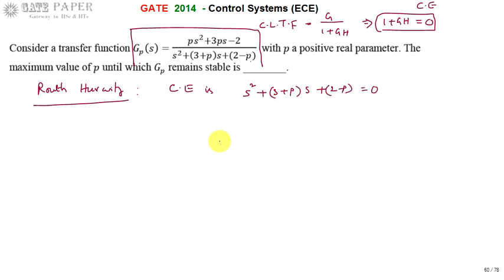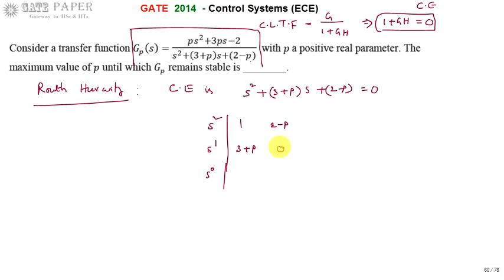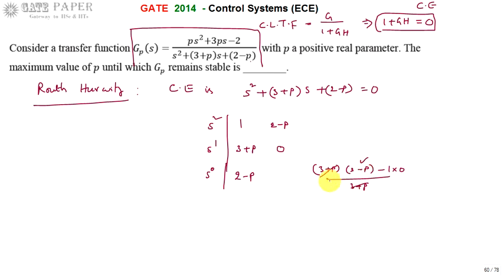Applying Routh-Hurwitz criteria, we set up the Routh array with rows s², s¹, and s⁰. The s² row coefficient is 1, the s¹ coefficient is (3 + p), and the s⁰ coefficient is (2 − p). For the s⁰ row, the calculation is: [(3 + p)(2 − p) − 1×0] divided by (3 + p), which simplifies to (2 − p) after cancellation.